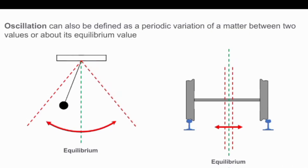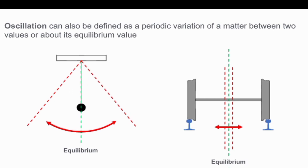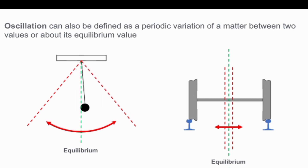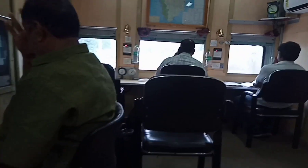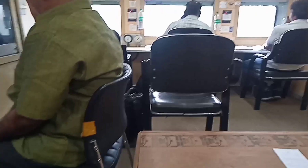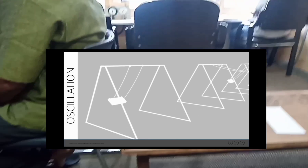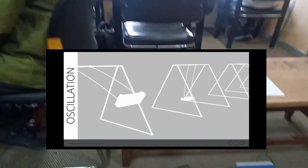In this video we can see the working of OMS equipment. A periodic variation of a matter between two values or about its equilibrium value is called oscillation. The OMS system works on the basis of the oscillation principle.